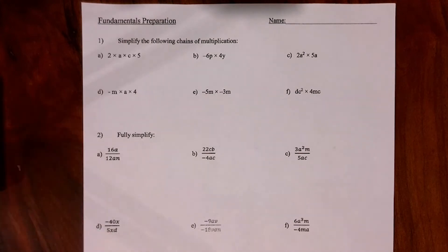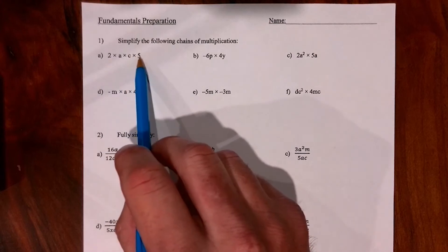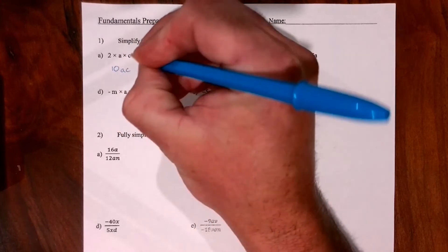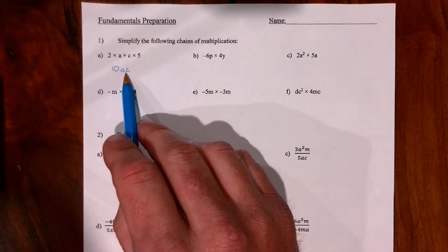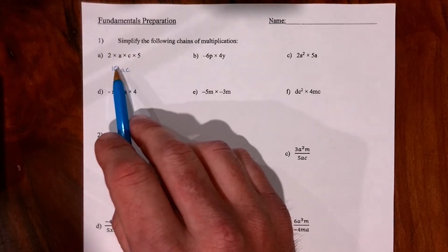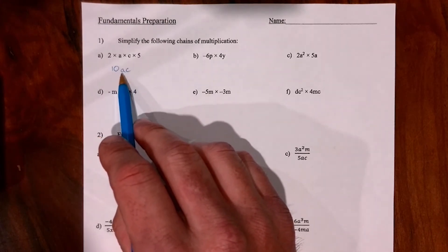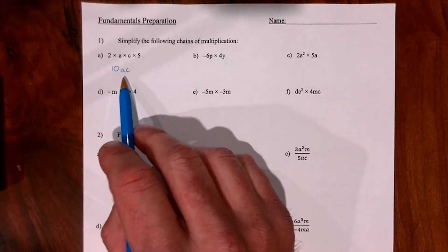When simplifying expressions where terms are all multiplied together, we're allowed to collect like terms. We can multiply the numbers together — so two fives are ten — and then stack the letters right beside one another. There are actually times signs between each of these, but we don't write them in. You don't need to put letters in alphabetical order, but it's usually good practice.